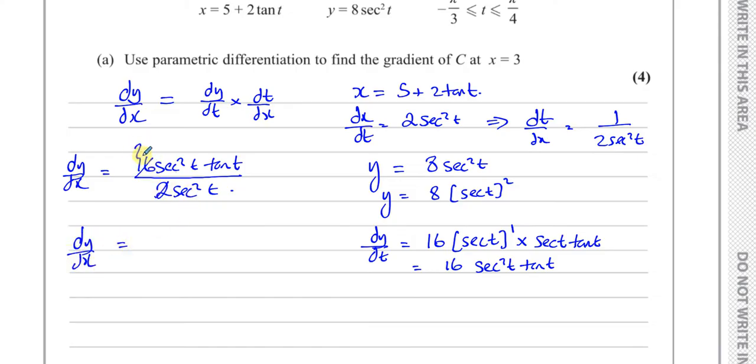And we can see very clearly now what's going to happen. The 2 cancels with the 16, leave you 8, and the secant squared t cancel out, leaving you with 8 times tan of t.